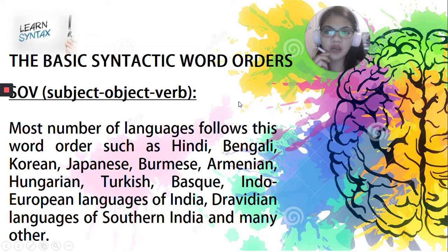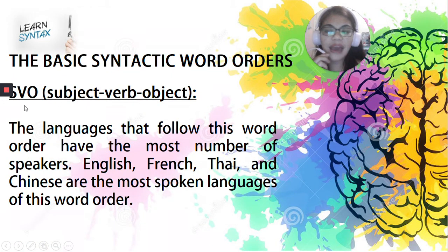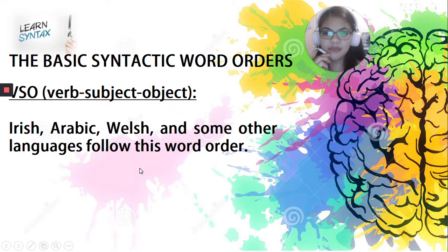For the first very common syntactic word order, we have the so-called SOV. It follows the word order subject, object, and verb. Here are the languages which follow this kind of word order. Second, we have the SVO, or subject, verb, object. The languages which follow such include the English language. Third is the VSO, or verb, subject, object, which is being followed by these languages.